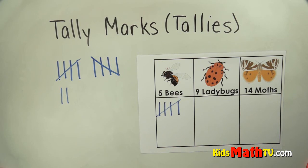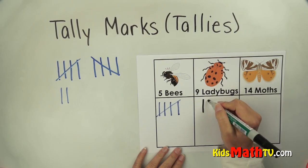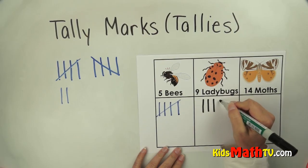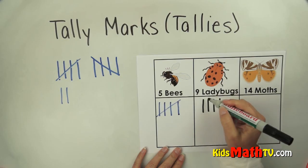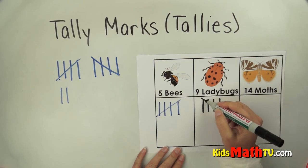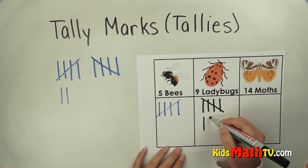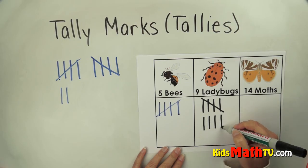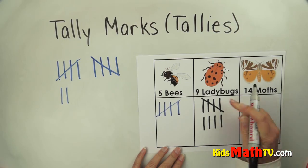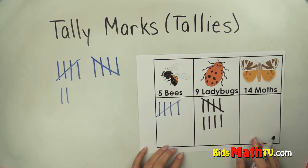How about the ladybugs? There are nine ladybugs. Let's tally: one, two, three, four. Now I'm at five, so I'm going to cross — five. Start a new set: six, seven, eight, nine. Five plus four more is the nine ladybugs.